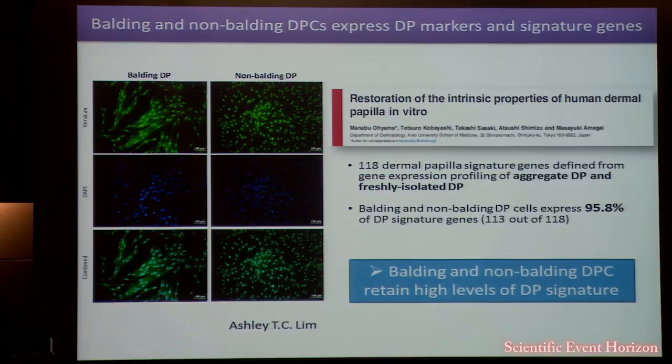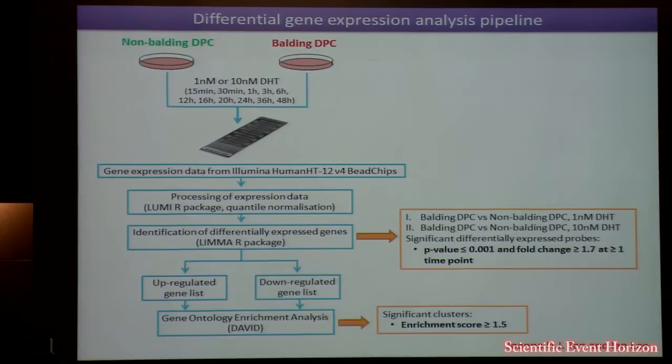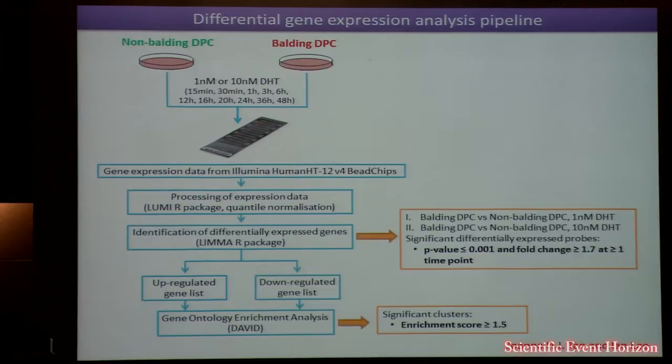To find out which genes are differentially expressed between balding and non-balding cells, we treated them with either 1 nanomolar or 10 nanomolar of DHT for up to 48 hours, sampling gene expression at 12 different time points using an Illumina B-chip. We identified differentially expressed genes in balding versus non-balding, separating those up-regulated from those down-regulated, then passed this gene list through a gene ontology enrichment analysis.